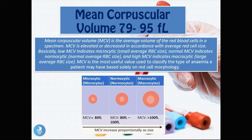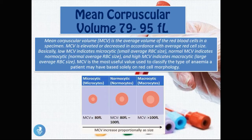The MCV is elevated or decreased in accordance with the average red blood cell size. A low MCV indicates a microcytic or small average red blood cell size, a normal MCV indicates a normocytic or normal size, and a high MCV indicates a macrocytic or large average red blood cell size.